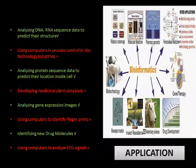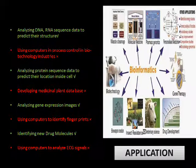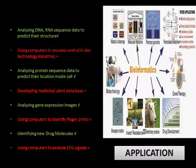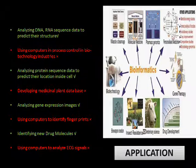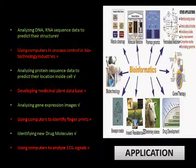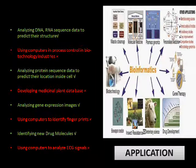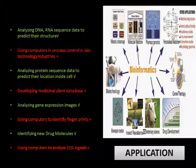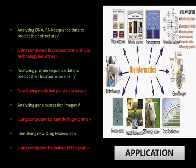For example, analyzing DNA or RNA sequences to predict their structures is bioinformatics, but using computers in process control in biotechnology is not bioinformatics. Similarly, analyzing protein sequences to predict their location inside the cell is bioinformatics, but not just developing a medicinal database and putting some data. It should be a database like NCBI where they are frequently depositing data and maintaining tools to access that data.